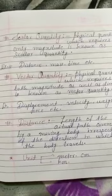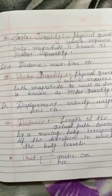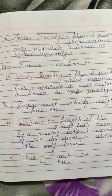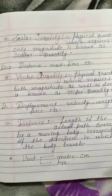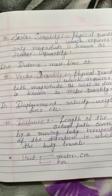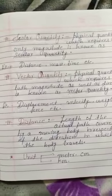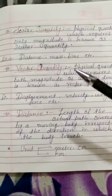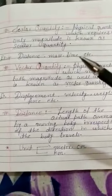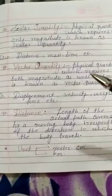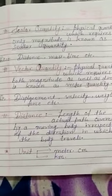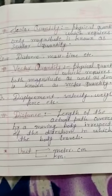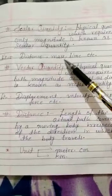Now, what do you understand by the term magnitude? Magnitude means its value. Suppose I say 5 kilometers — that 5 kilometers is its magnitude. But if I say 5 kilometers towards east, it means we are mentioning the magnitude along with the direction. So a quantity in which only magnitude is mentioned, only a numerical value, that quantity is termed as a scalar quantity.